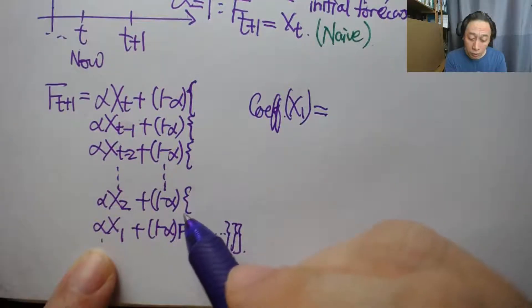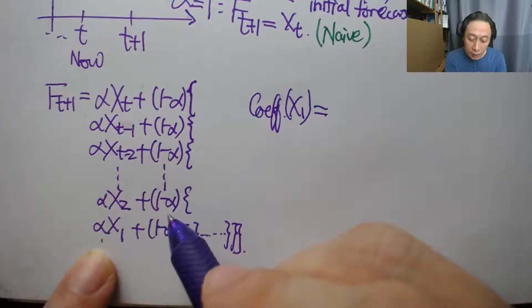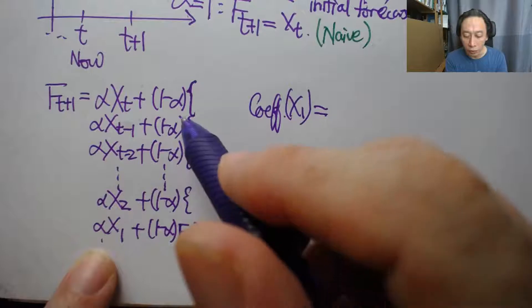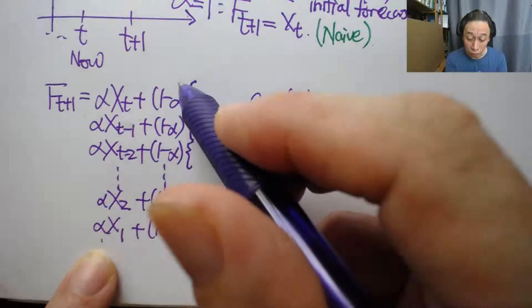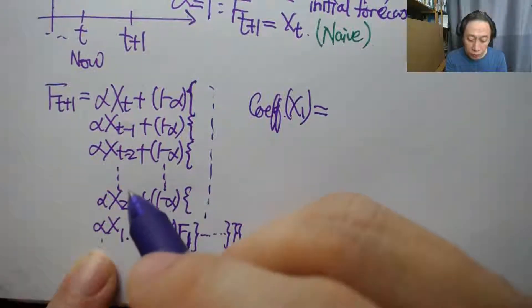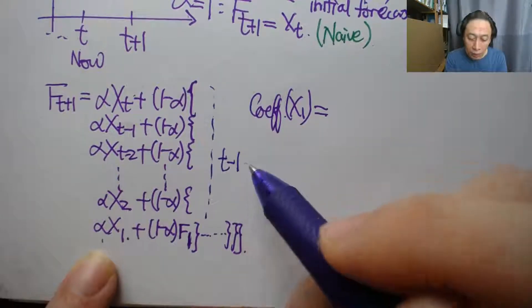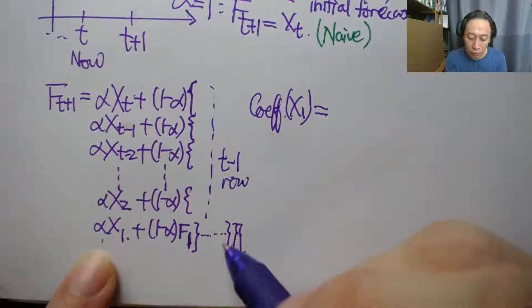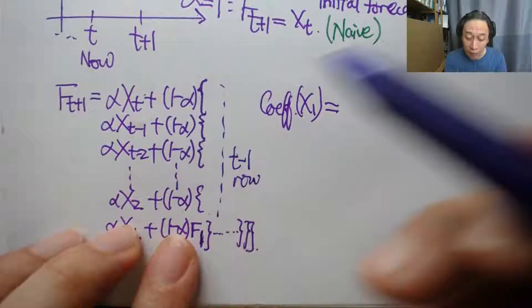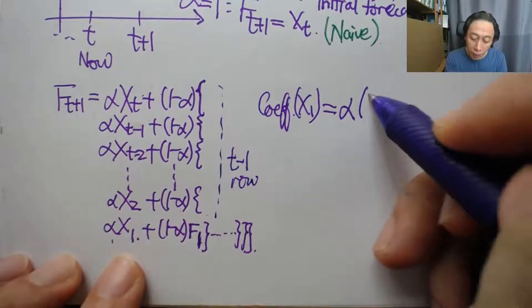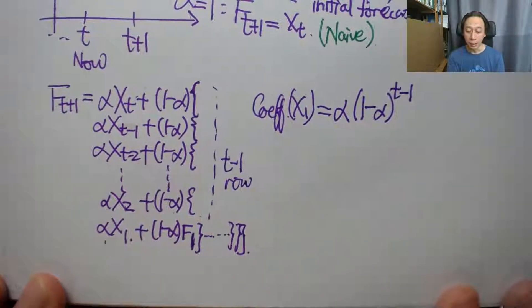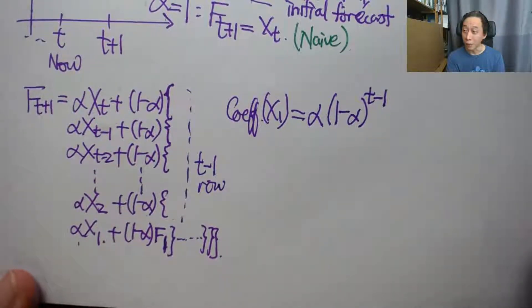But we are also multiplying by 1 minus alpha outside here, then another 1 minus alpha in the immediate curly bracket outside here, and so on and so forth, until we get to the first curly bracket. So there are altogether, because it's 1, 2, 3 until t, there are t minus 1 rows here. And then we have a final row at the bottom here. So if we take this out, we have t minus 1, 1 minus alpha brackets here. So we are going to multiply by 1 minus alpha, t minus 1 number of times. So that's the way we get an insight about the coefficient of x of one very quickly.